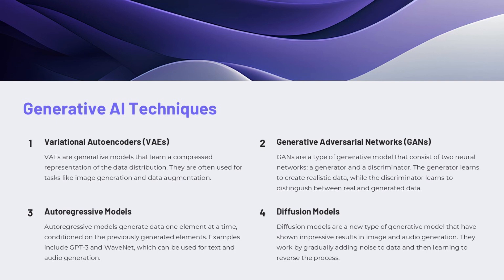Diffusion models are a newer type of generative model that have shown impressive results in image and audio generation. They work by gradually adding noise to the data and then learning to reverse the process, generating new samples that resemble the original data. Diffusion models can produce high-quality, diverse outputs, and are often more stable to train than GANs.